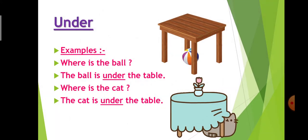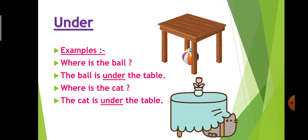Next preposition is 'under'. Under means below. Just see the first picture and tell me where is the ball. The ball is under the table. The ball is below the table. And in the next picture, just see and tell me where is the cat. The cat is under the table. The cat is below the table, so we are using preposition 'under'.